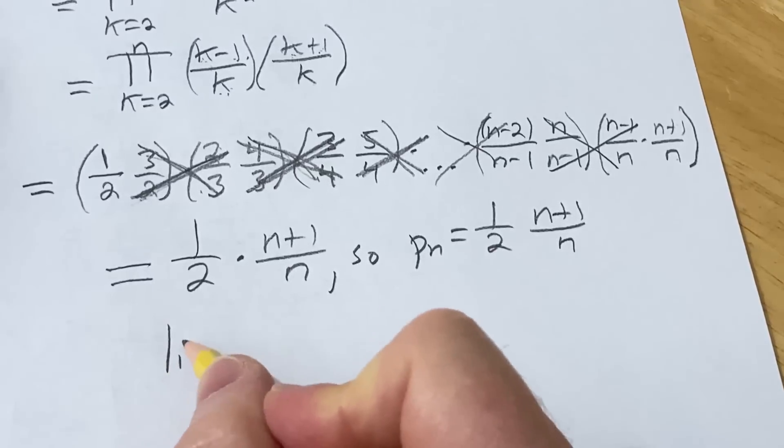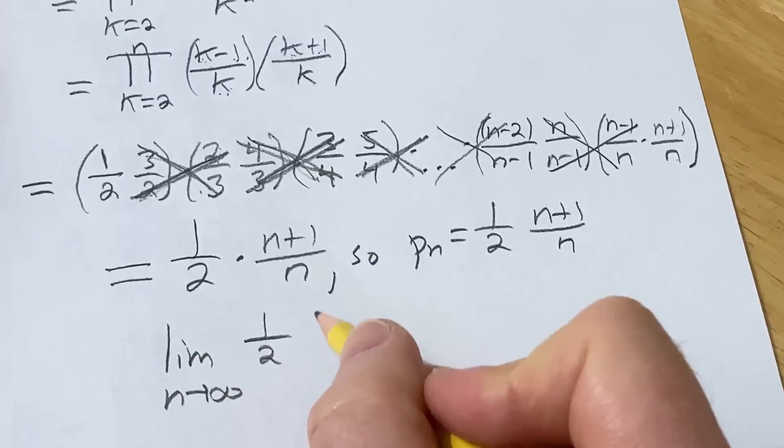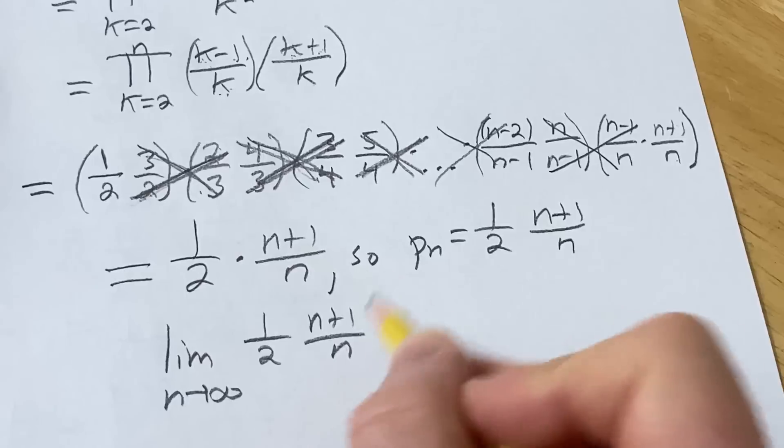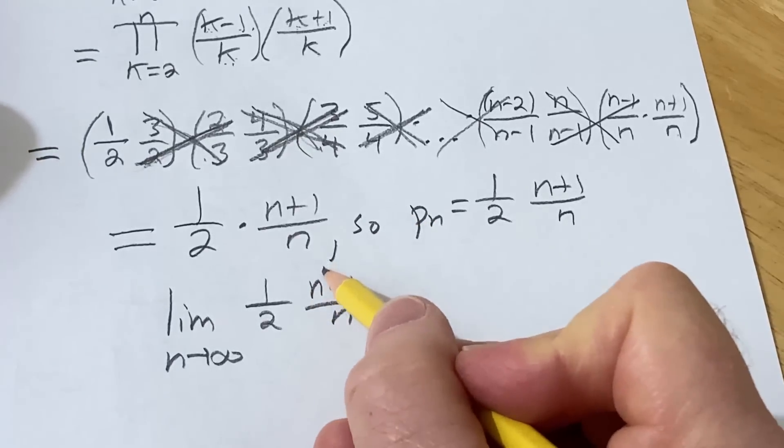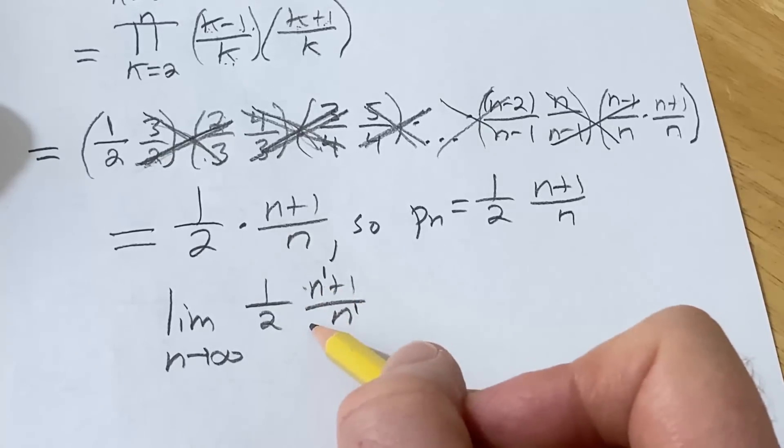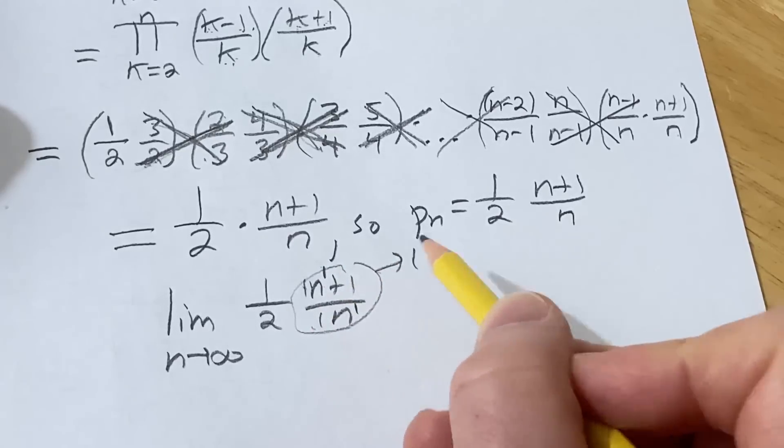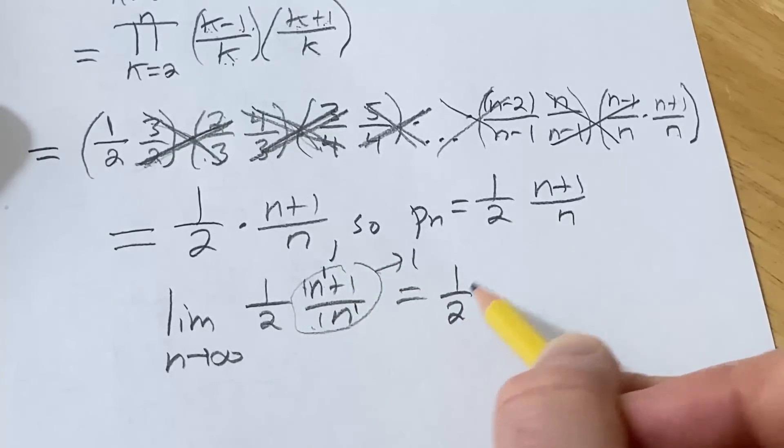So now we just take the limit as n approaches infinity. And this part's really easy. This is (n+1)/n. So because both of these have the same exponent, they grow at the same rate. So the answer here is just the ratio of the coefficients. So this is a 1, this is a 1. So this is just going to converge to 1. So we just get one half. So that's the answer.